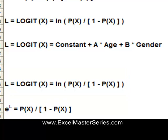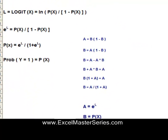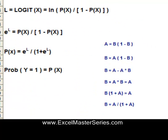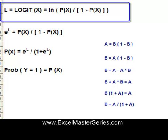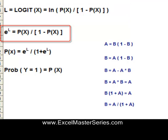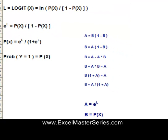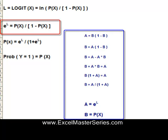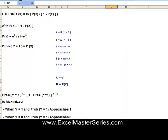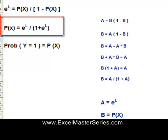So the logit L equals the natural log of the quantity P(X) over 1 minus P(X). If we take E to the power of each side of that equation, we have E to the L equals simply the odds of X, which is P(X) over 1 minus P(X). Running that through algebraic manipulation, we get that the probability of X equals E to the L over 1 plus E to the L.